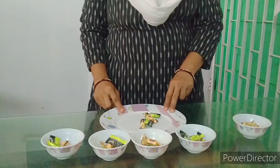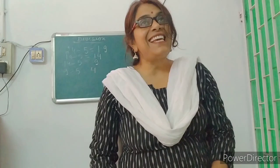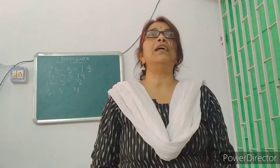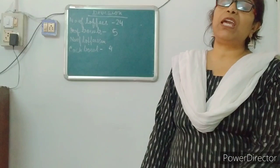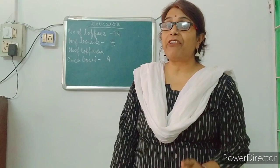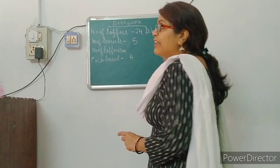Today, in this video number 1 of chapter 5, I am going to explain about division. What is division? Division is the equal distribution of the object or number. In the starting, we have 24 toffees. That means this 24 is called dividend. Dividend means the number to be divided.